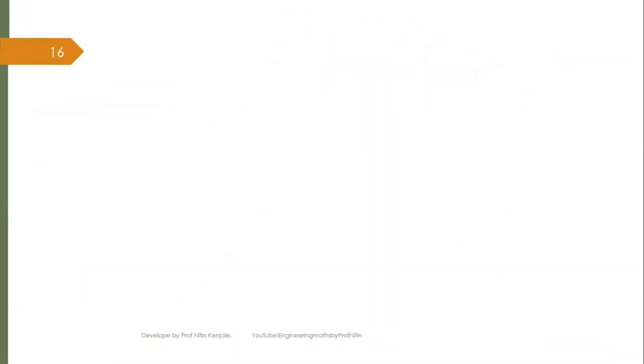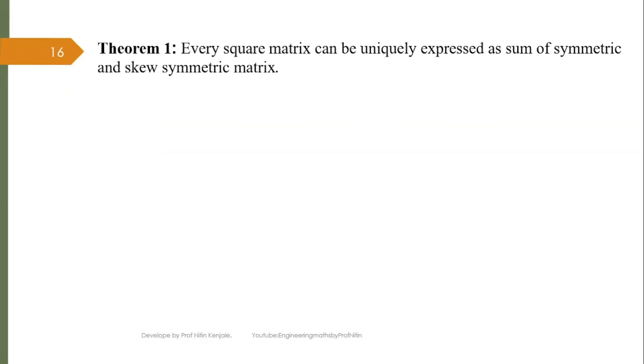Let us begin with Theorem 1. It states that every square matrix can be uniquely expressed as sum of symmetric and skew-symmetric matrix. So let us see its proof.